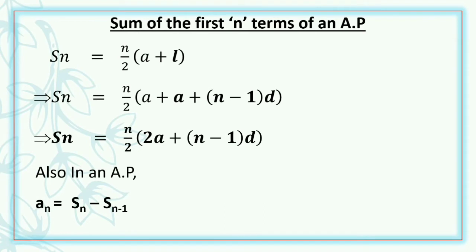Now, in this formula we can substitute for l. l means the last term, or the nth term in a progression with n terms. That means we can say l = a + (n−1)d. So substituting the value of l, we get Sn = (n/2)[2a + (n−1)d]. So in an arithmetic progression, the sum of first n terms is equal to (n/2)[2a + (n−1)d], where n is the number of terms, a is the first term, and d is the common difference.